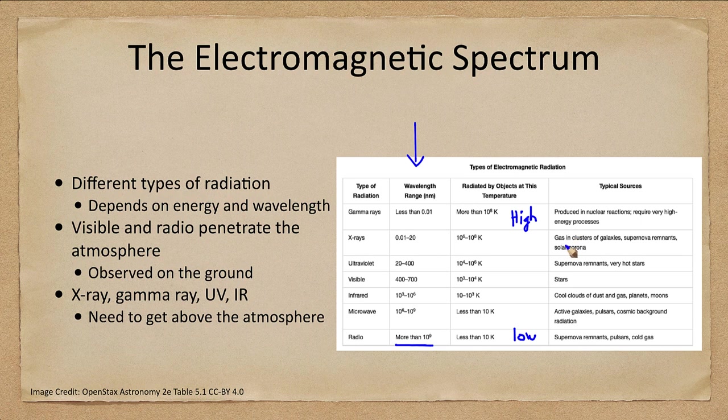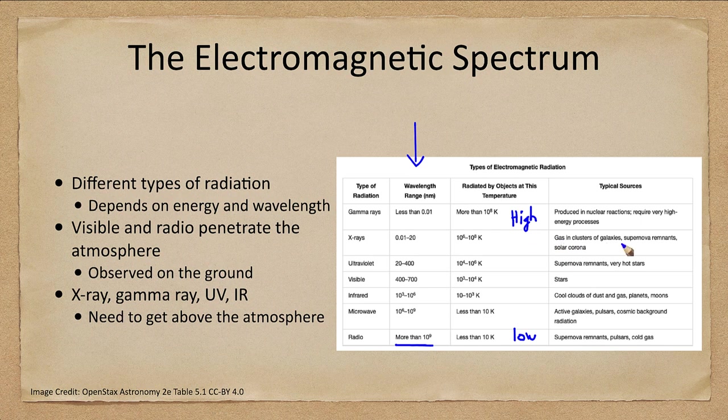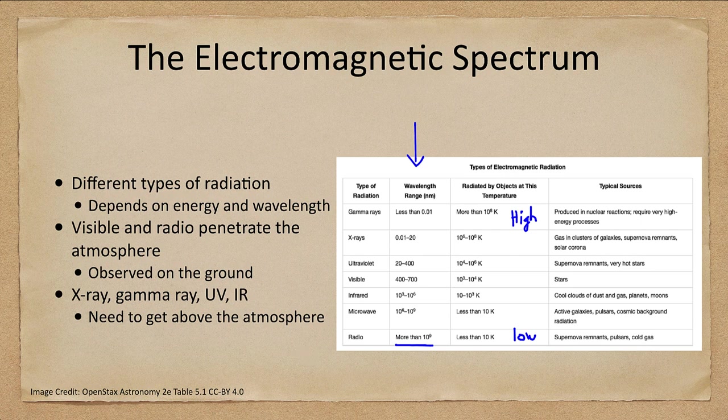And high energy processes like the x-rays in supernova remnants and clusters, we will see very much x-rays and even into some gamma rays in some very high energy situations.